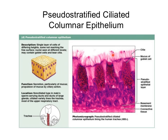The surface has some modifications like cilia and stereocilia. The goblet cells secrete mucus and the cilia help to spread the mucus over the surface. The main functions are secretion of mucus and propulsion of mucus by ciliary action.